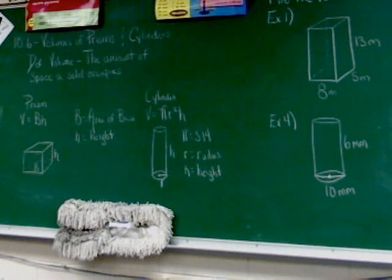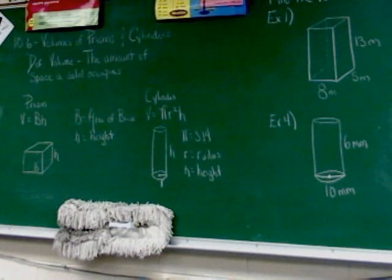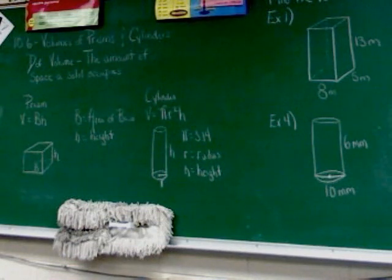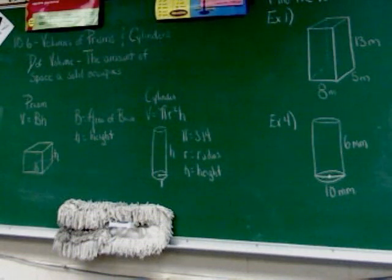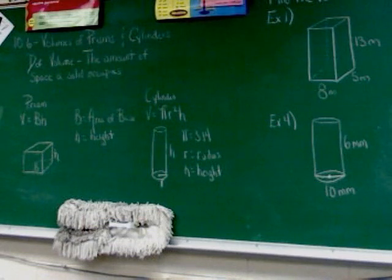We're not talking about just the faces anymore, because that's what we've been talking about so far — surface area, each part of it added together. Now we're talking about the volume: how much total space the solid occupies. Not its weight, how much space it takes up.